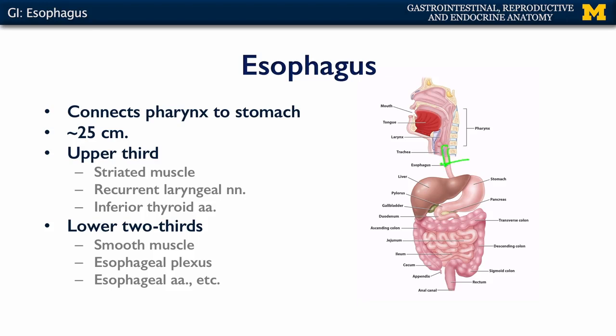Beyond that upper third, the lower two-thirds of the esophagus are imbued with smooth muscle, and that smooth muscle is under control of the esophageal plexus. The esophageal plexus consists of contributions from the vagal trunk and various branches of the thoracic sympathetic trunk. This portion is supplied with blood via the esophageal arteries and other branches, such as the left gastric artery and the left inferior phrenic artery.